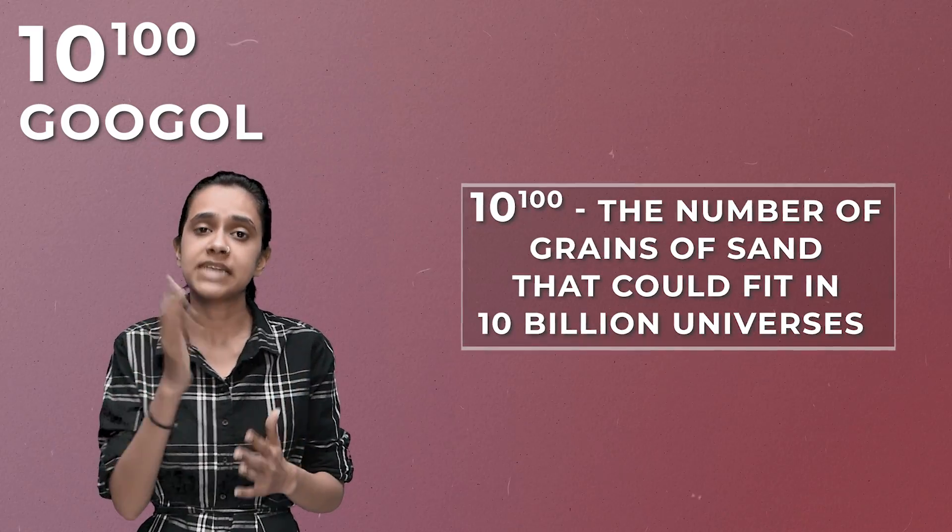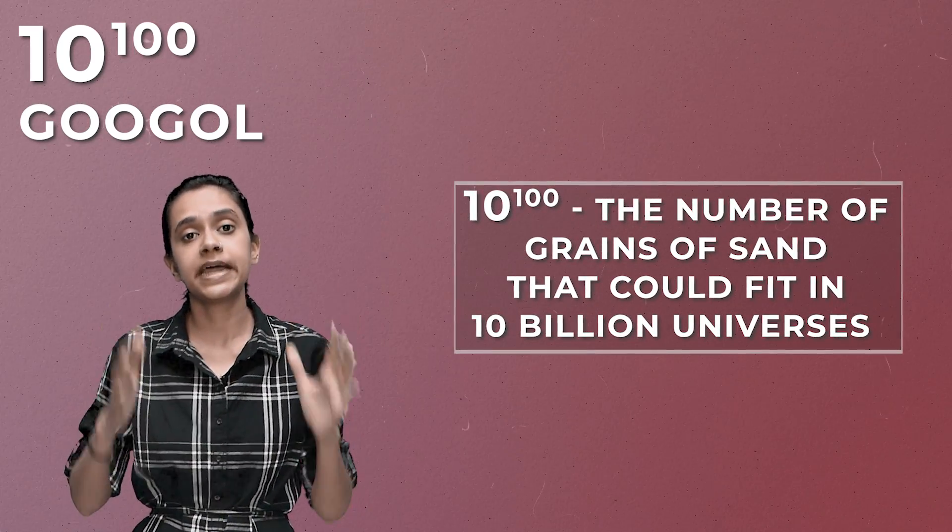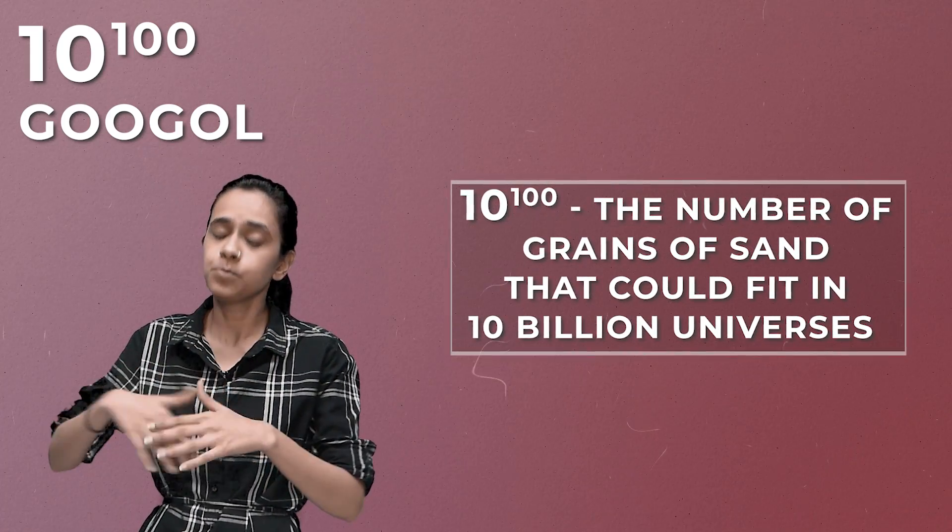But wait — it doesn't end there, because we have an even bigger number: 10 to the power 100, also called a Googol. A Googol is so large that many people have never heard of it. If you had sand particles equal to 1 Googol, you could fill 10 billion entire universes. If you packed universes with no empty space between them, the number of neutrons would approach 10 to the power 128.